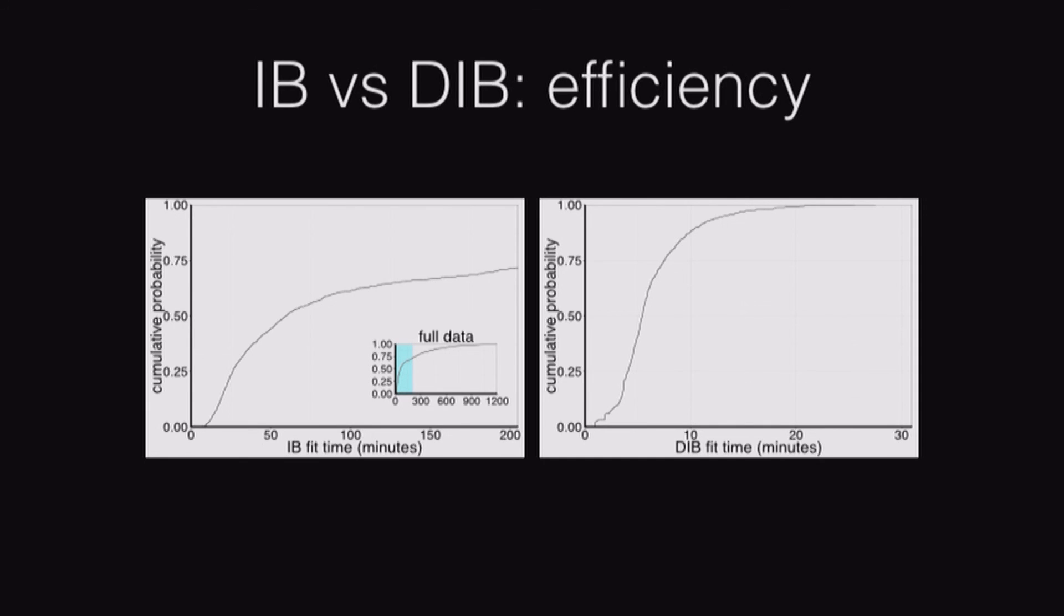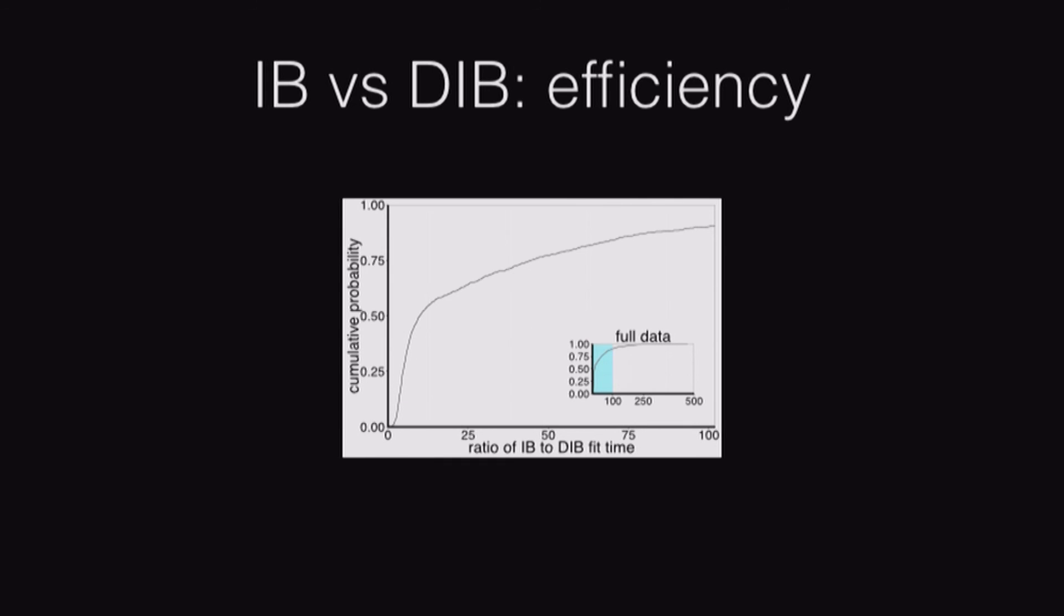Finally, of course, if an algorithm performs better, that's not enough. It needs to be computationally efficient. These are the ratio of IB to DIB fit times. You probably can't quite read this, but the key statistics here are like 50% of the time DIB fits 10 times faster, and 25% of the time it's 50% faster. Basically, it's about one to two orders of magnitude faster. Again, this may vary by data set, but at least on the data sets we've considered this is true.